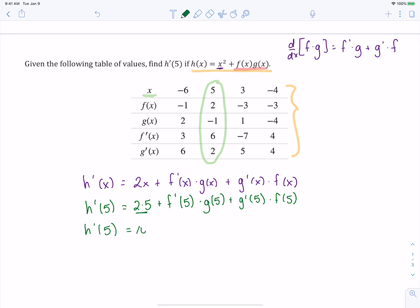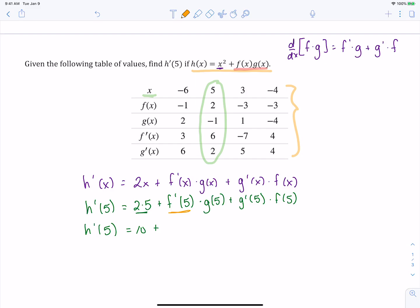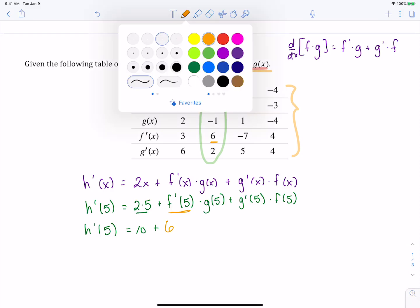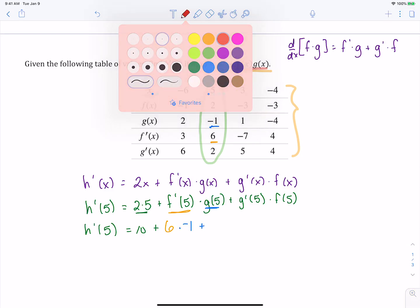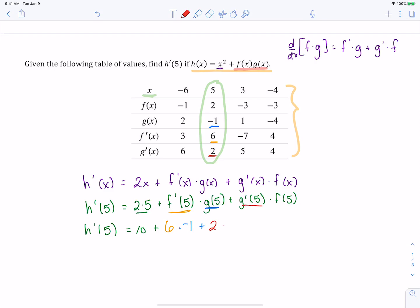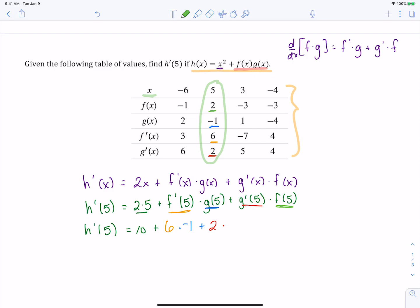We can go ahead and do 2 times 5, that's 10. And then we have f'(5), which is 6. So we'll write that in orange there. Let's grab blue for g(5). g(5) is -1. And then plus g'(5), which is 2, times f(5), which is 2. So now we just need to do arithmetic to finish this up. We're going to have that h'(5) is going to be 10 plus 6(-1) plus 2(2), which is 10 + (-6) + 4, which all together is going to give us 8.